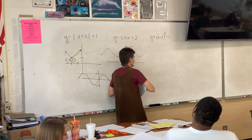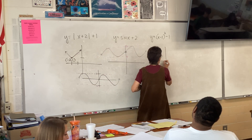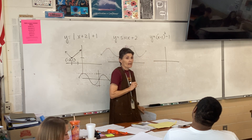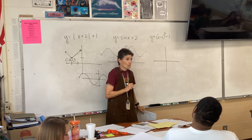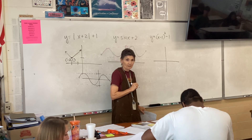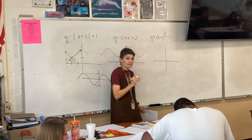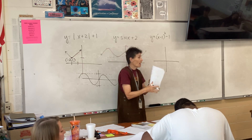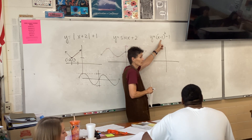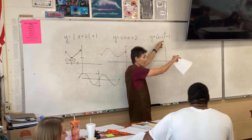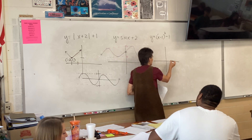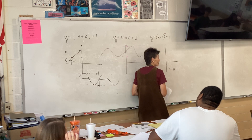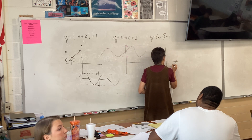What about this one — what shape is it? x squared — it's a parabola, a quadratic. Normally we'd view it from the origin, but this one has been moved right 1 and down 1, so the vertex is at that point, and then I draw my parabola.